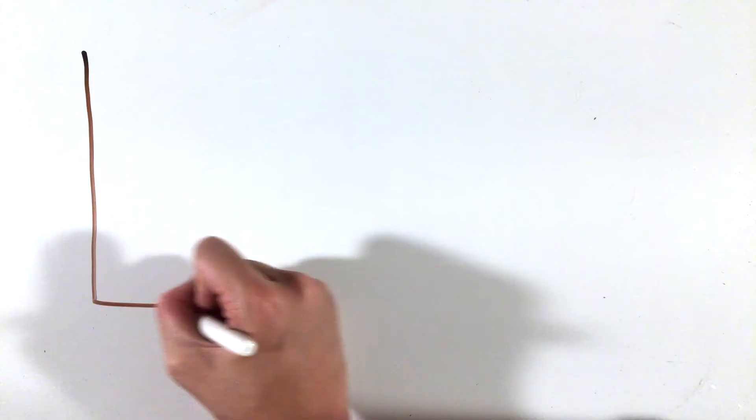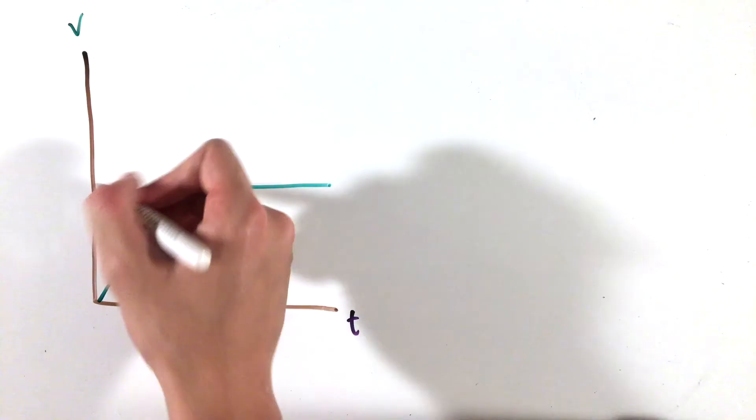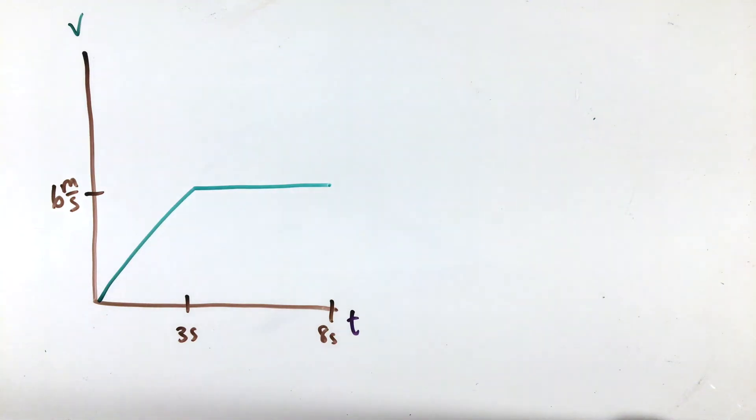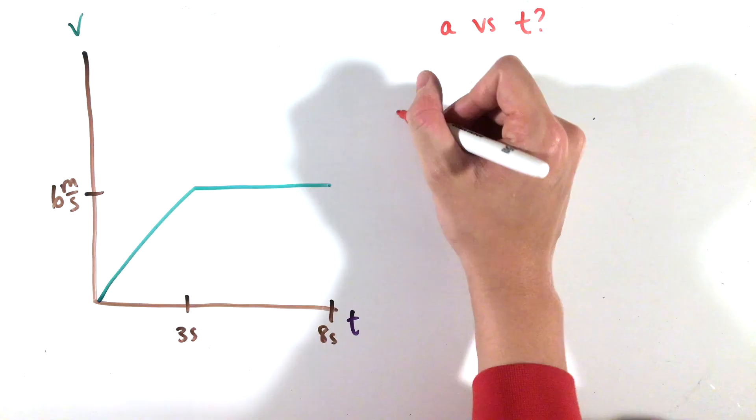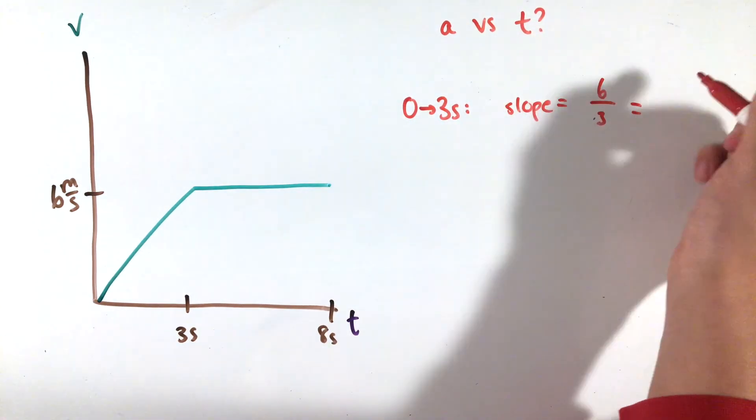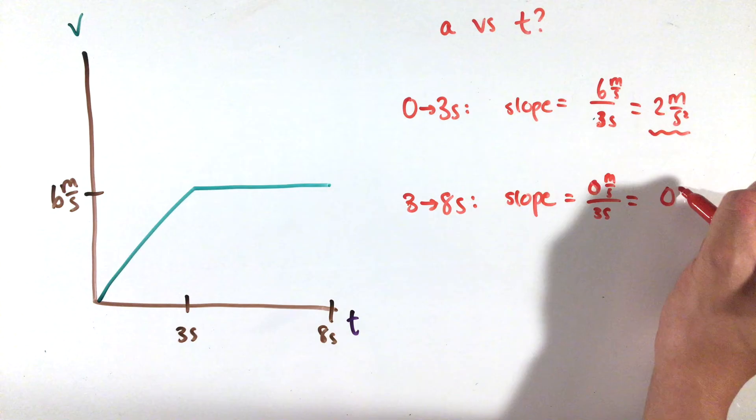To explain this concept a little bit more clearly, let's take a look at this velocity versus time graph and draw its corresponding position and acceleration versus time graphs too. To draw the acceleration versus time graph, we would be going down a level, thus we must look at the slope. From 0 to 3 seconds, we can find the slope using the rise over run formula from your math class, giving us a value of 2.